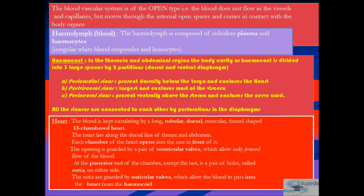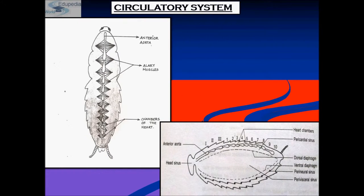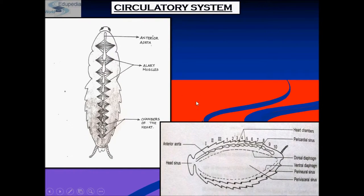The opening between chambers is guarded by a pair of ventricular walls which allow only forward flow of blood and not backward flow. At the posterior end of each chamber, except the last, is a pair of holes called ostia.